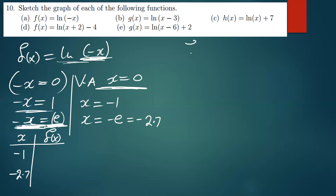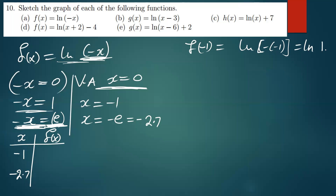Now we find the y-values. When x is negative one, f(negative 1) equals ln(negative × negative 1) = ln(1), and ln(1) is simply zero. So we put zero in the table.